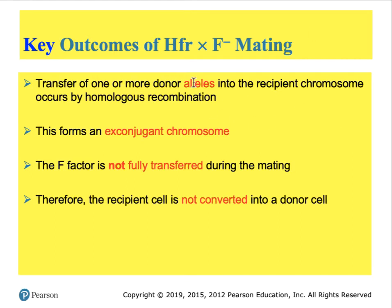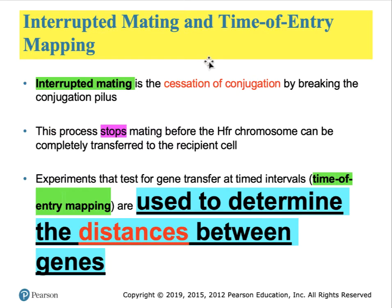Several genetic principles are illustrated by matings between HFR and F-minus strains. These matings can transfer alleles of one strain of bacteria to the other, and the recipient chromosome does so by homologous recombination with the incoming fragment of DNA. The F-factor is not fully transferred during the mating, and the recipient cell is not converted into a donor cell because of its lack of the far end of the F-factor. Geneticists have made use of HFR strains and the ability to transfer chromosomes in order to map the distance between genes on the bacterial or plasmid chromosome.